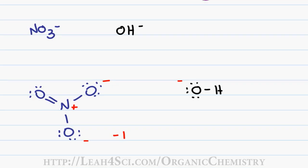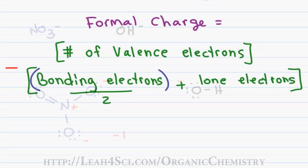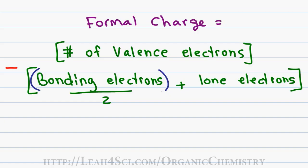In organic chemistry, it's important to be able to look at the molecule and quickly determine the formal charge. But if you look at your textbook, you'll get some wacky formula that looks something like this. Formal charge is equal to the number of valence electrons minus the bonding electrons divided by two plus the lone electrons. Are you confused? So am I.